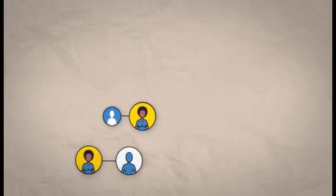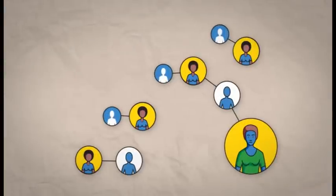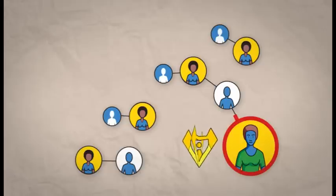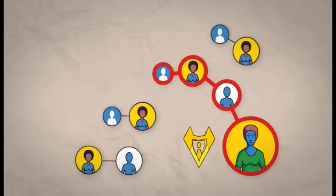In communities where being faithful to one partner is common, the number of people infected with HIV is much lower. This is because if one person becomes infected, the HIV spreads much more slowly in the group.